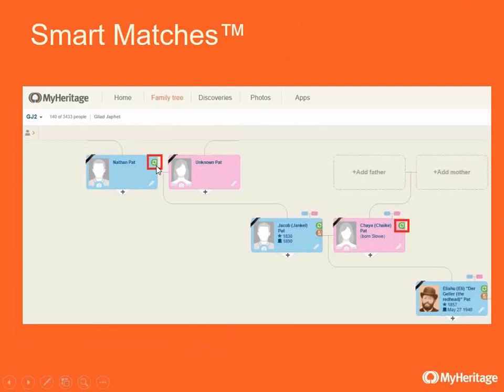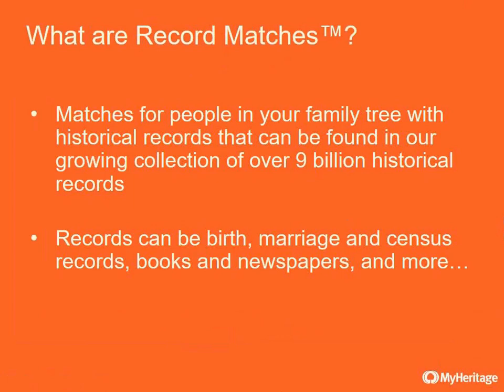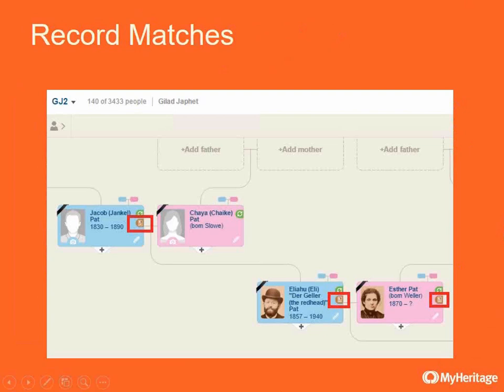We're comparing names, facts, and connections intelligently so you'll get the most accurate matches to your family tree. Smart matches can be found in your family tree with a green recycle icon that indicates we found a match for you in another member's family tree. Record matches are matches for people in your family tree with historical records found in our growing collection of over 9 billion historical records. Records can be birth, marriage, census, military records, books — whatever we have in our growing collection.